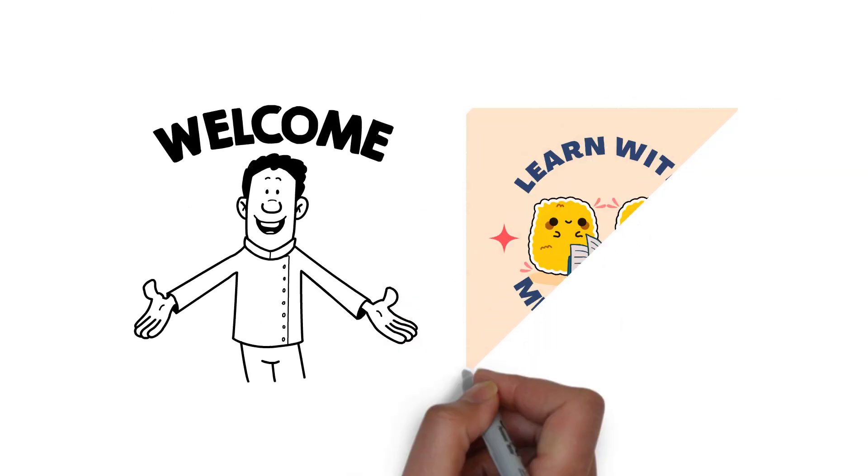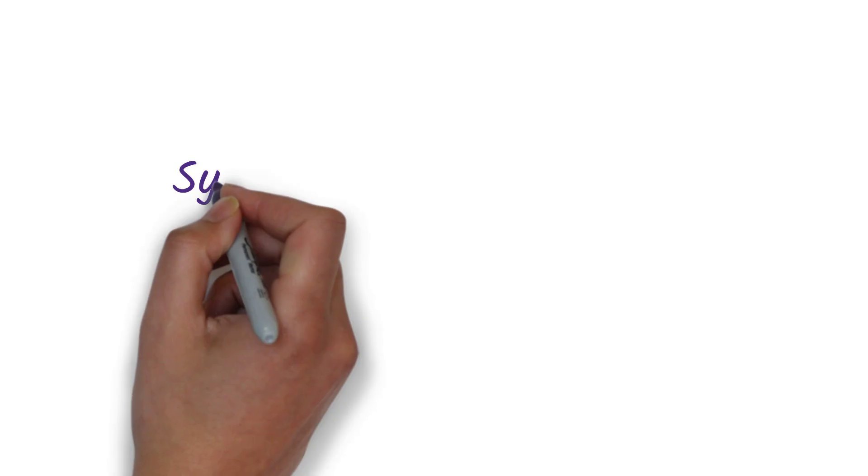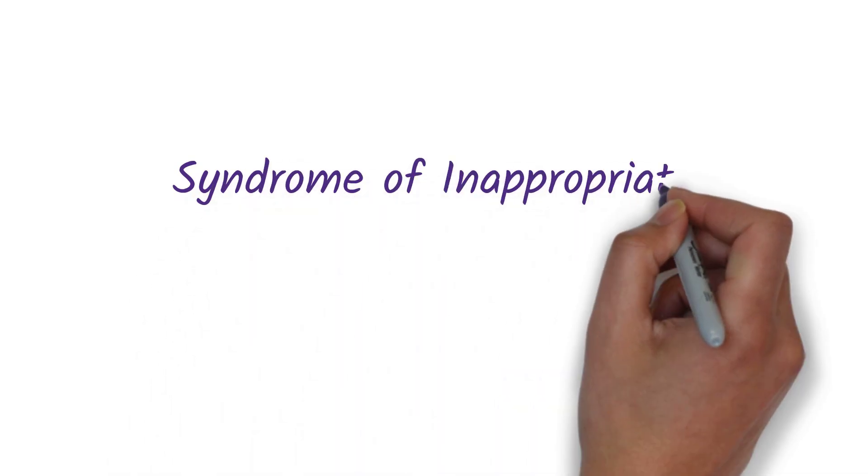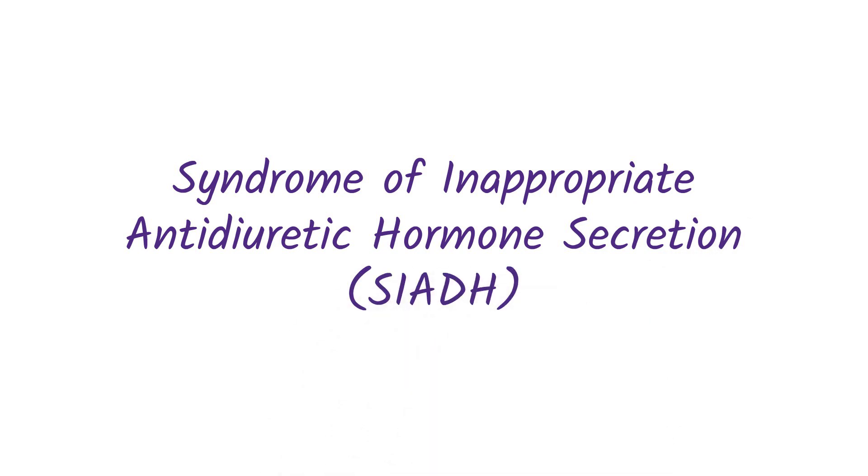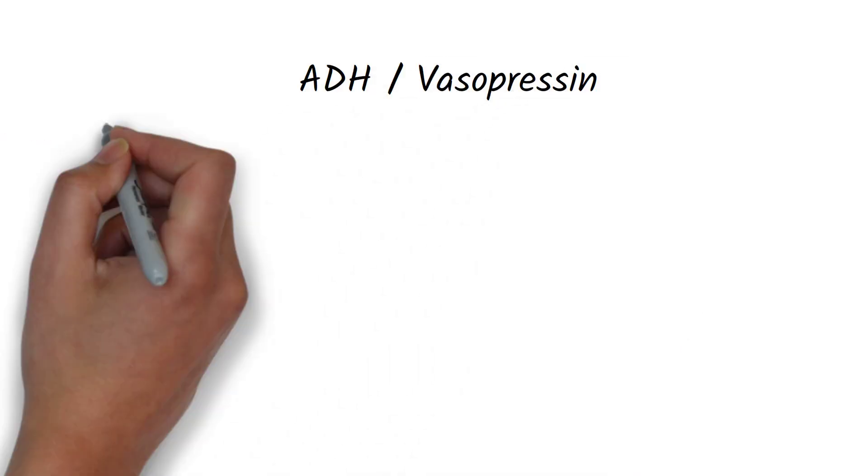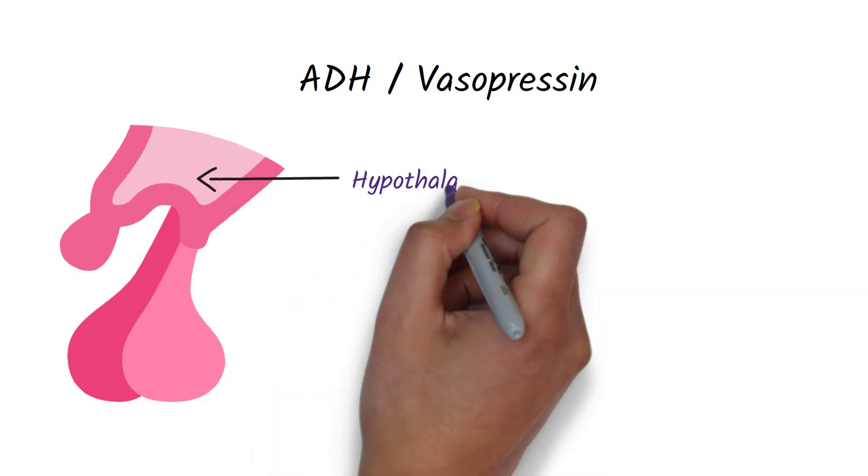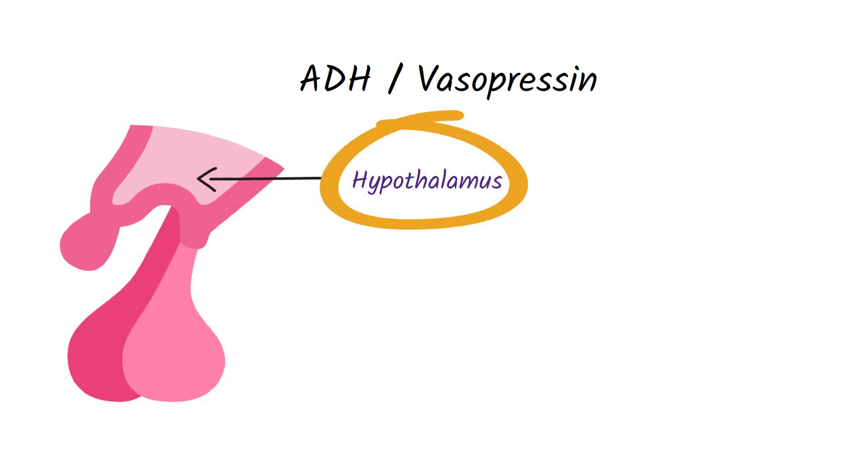Welcome back to Learn with Med Nuggets. In this video we will be talking about Syndrome of Inappropriate Antidiuretic Hormone secretion, also known as SIADH. ADH, also known as vasopressin, is a hormone that is made in the hypothalamus. It is then stored and released by the posterior pituitary gland.